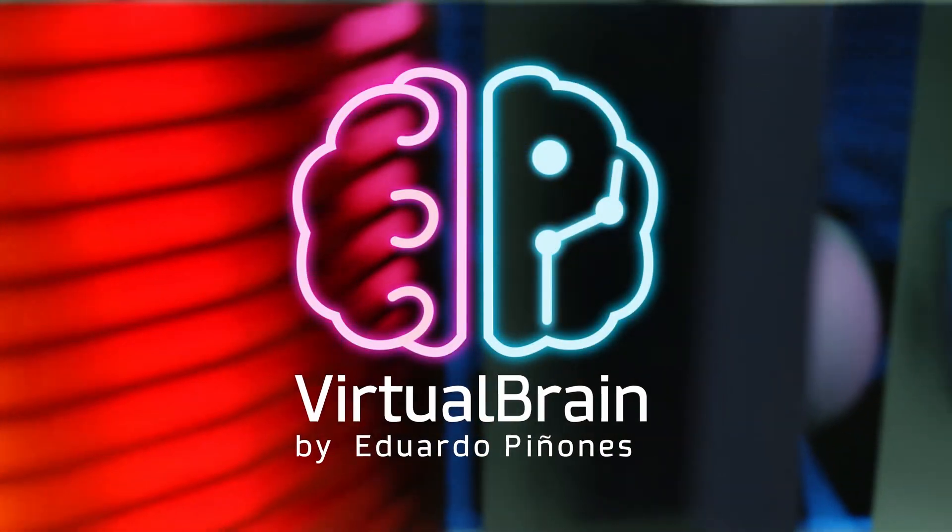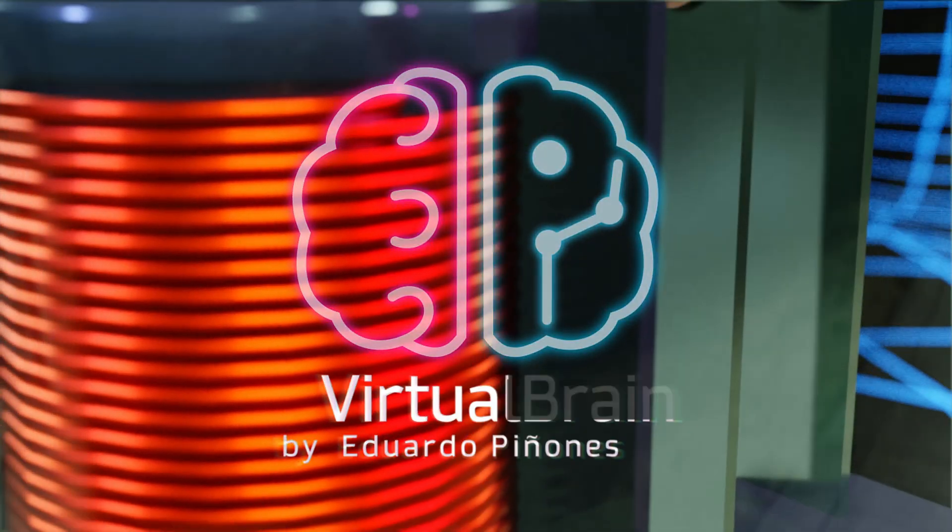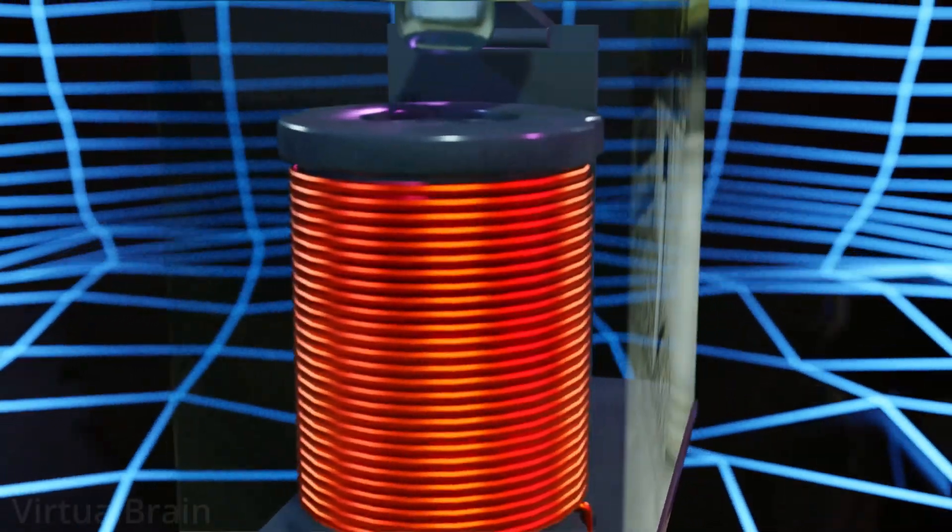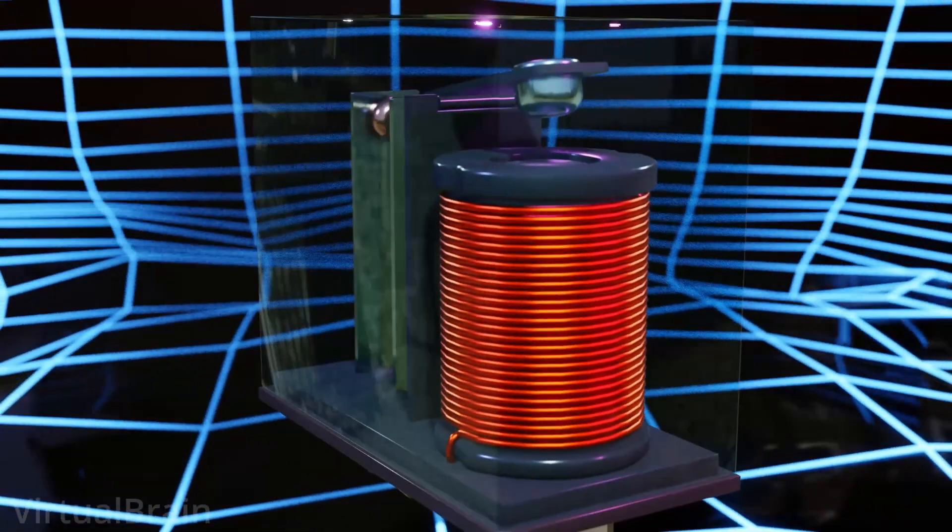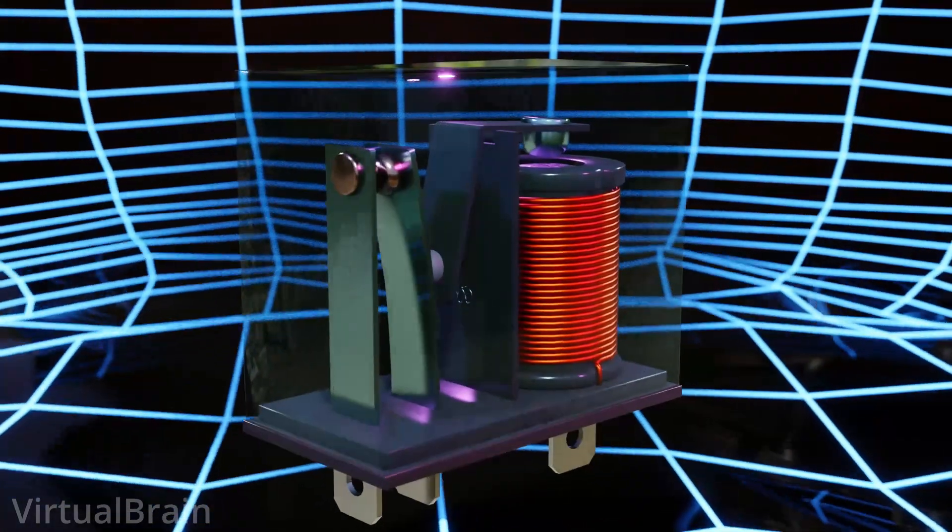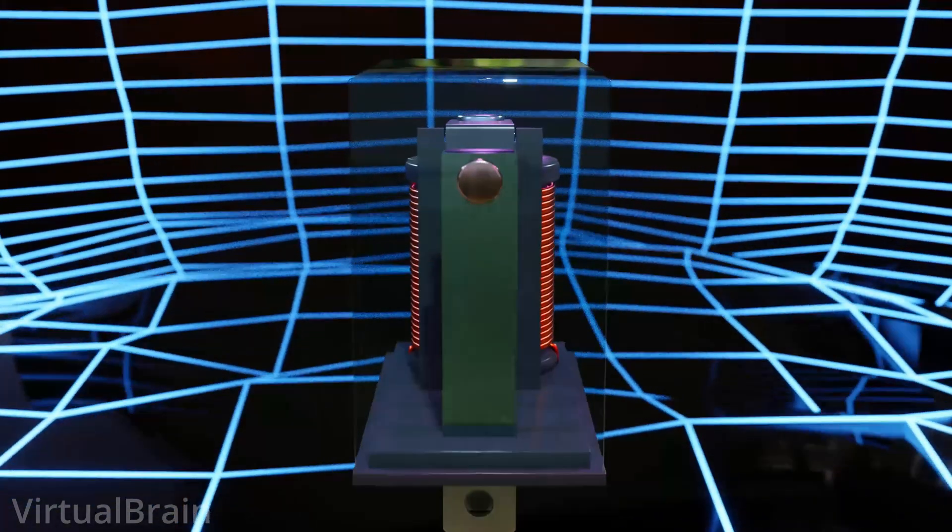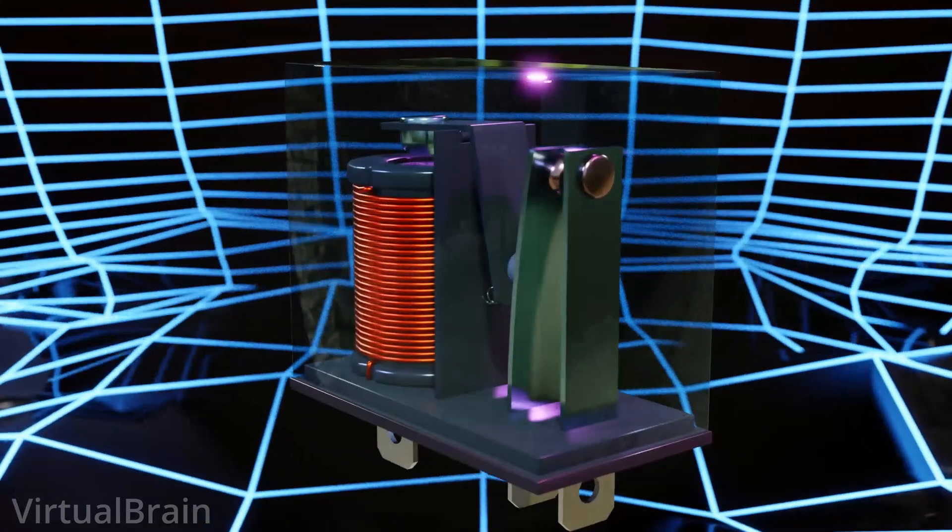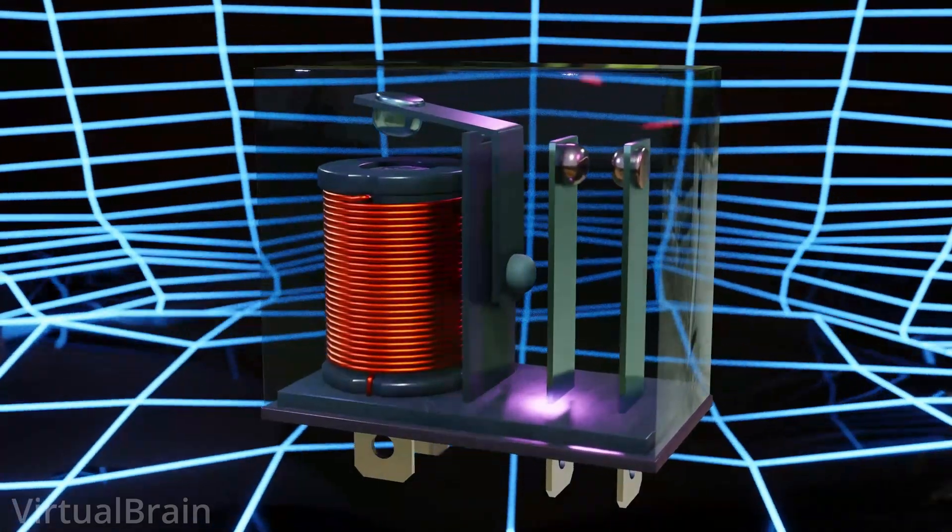A relay is an electrical device designed to interpret input signals in order to generate or abruptly eliminate the contact between two conductors in an electrical circuit. In other words, it's an electrically operated switch which also has the great advantage of electrically separating the controller circuit from the circuit being controlled.